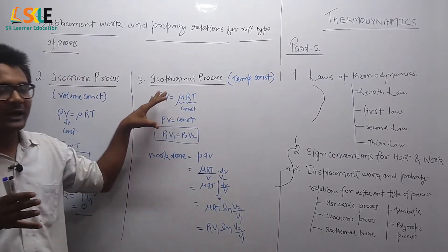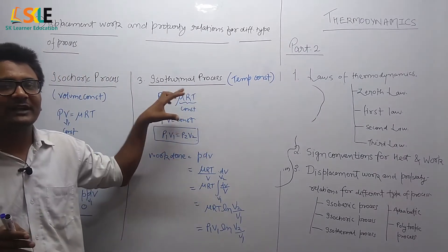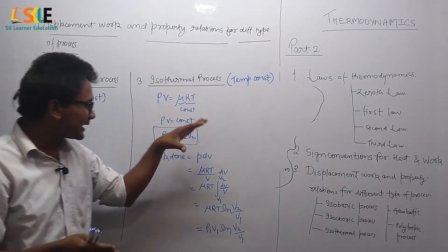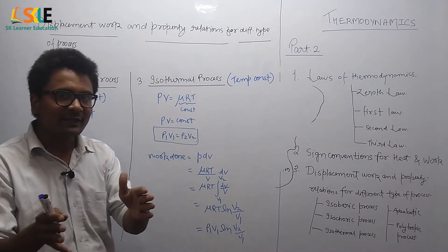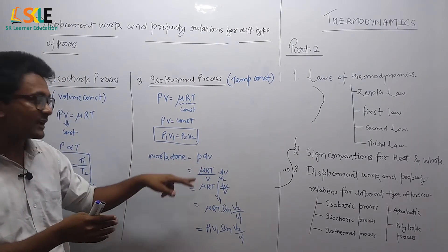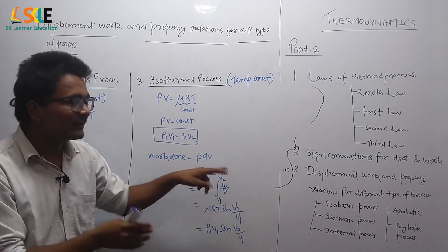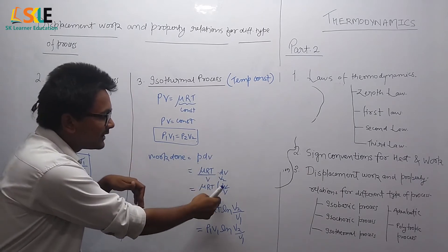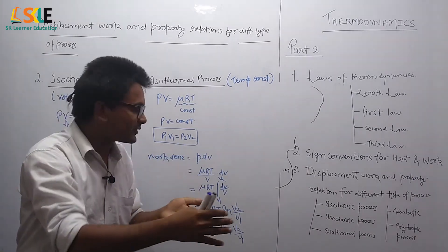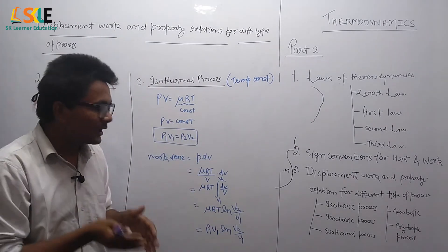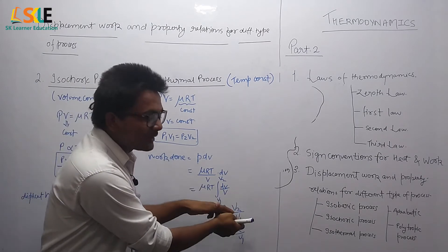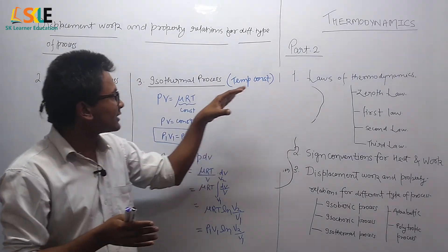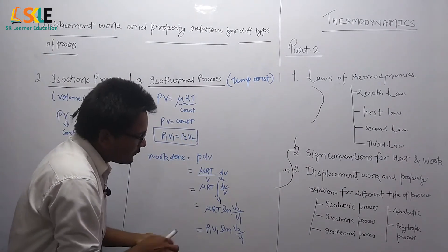Now we will see the isothermal process, where temperature is constant. From the ideal gas equation, pV equals constant, and the property relation is P1V1 = P2V2. For the work done, the displacement work is ∫p·dV. Substituting p = μRT/V, and since temperature is constant, μRT is constant and can be taken outside the integral from V1 to V2. The work done is μRT·ln(V2/V1). This is the work done for an isothermal process.